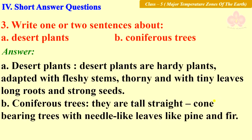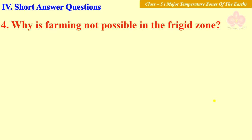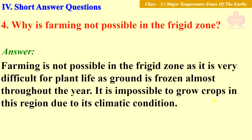Coniferous trees are tall, straight, cone-bearing trees with needle-like leaves, like pine and fir. Next question: Why is farming not possible in the frigid zone? Farming is not possible in the frigid zone as it is very difficult for plant life — the ground is frozen almost throughout the year, making it impossible to grow crops due to its climatic conditions.